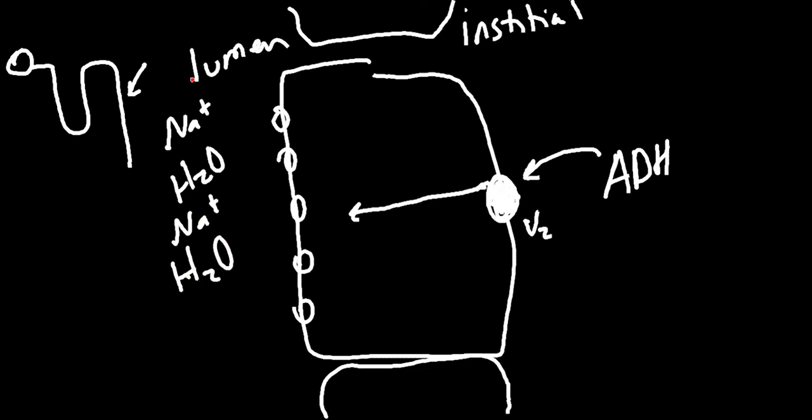In the lumen, it's destined for the ureter. We're about to lose it. We're in the collecting duct - this is our last chance to get it back. So ADH, anti-diuretic hormone - what does the name tell you? It says that you're not going to diurese, you're not going to pee. Anti-diuretic hormone means we're going to somehow decrease peeing.